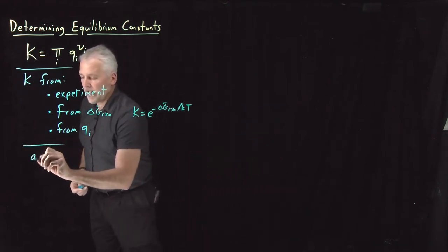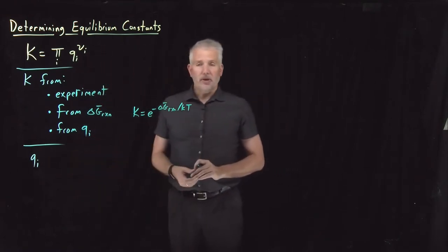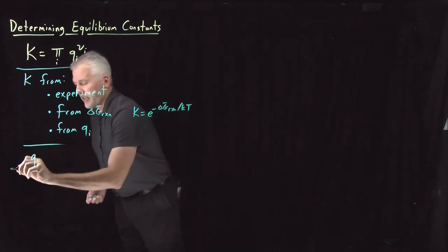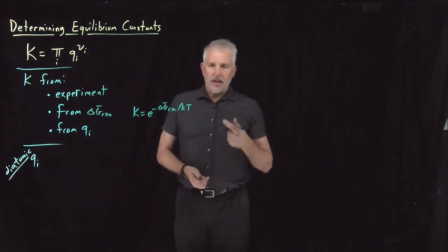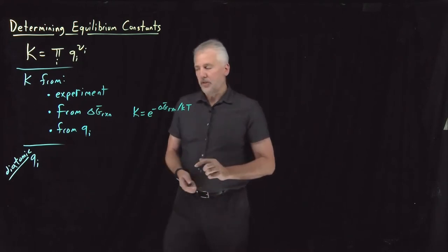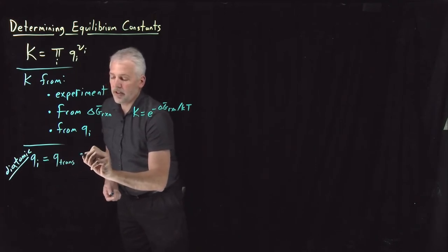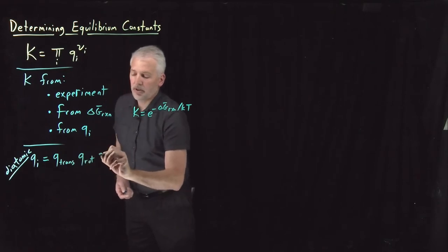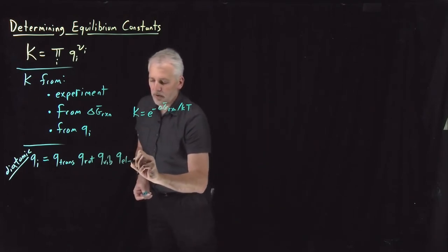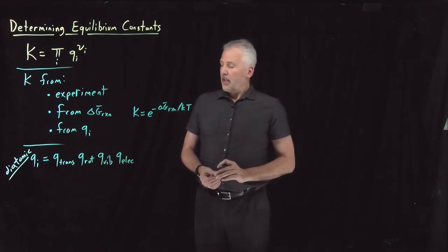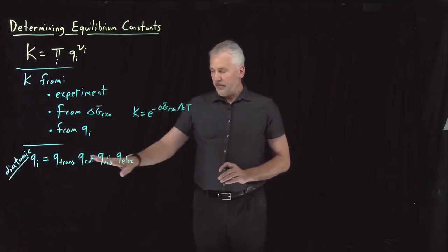For example, we know for gas phase molecules — in particular monatomic and diatomic molecules — we know how to write down a partition function. Let's consider the case of a diatomic molecule that obeys the particle-in-a-box, the harmonic oscillator, and the rigid rotor assumptions. That partition function can be thought of as a product of the translational partition function, the rotational partition function, the vibrational partition function, and we might also need to include an electronic partition function.